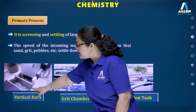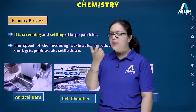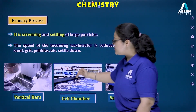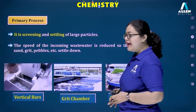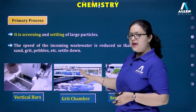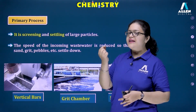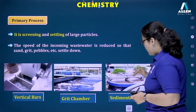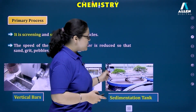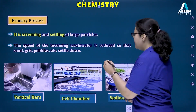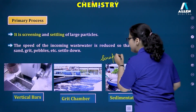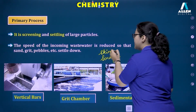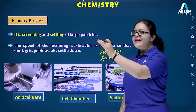The primary process has three steps. First, vertical metal bars — closely spaced — block and remove impurities like plastic, wood, cloths, rags, and sticks. Then the wastewater is drawn into the grit chamber, a narrow rectangular tank, where sand, grit, silt, and mud particles settle down. It is then drawn into the sedimentation tank, where organic impurities settle as sludge removed by a scraper, and light floatable impurities like oil and grease are removed by a skimmer. Clarified water then moves to the secondary process.